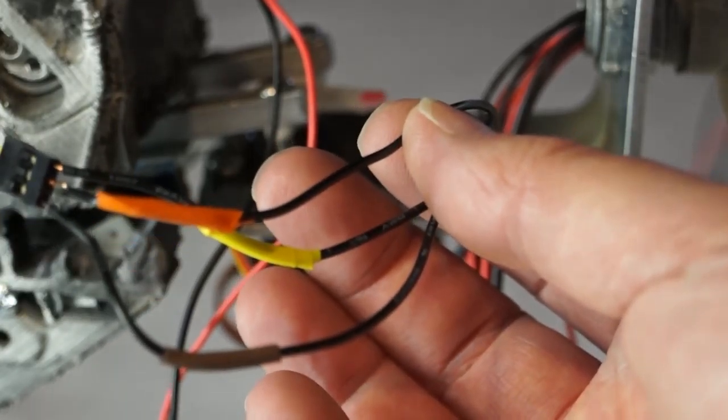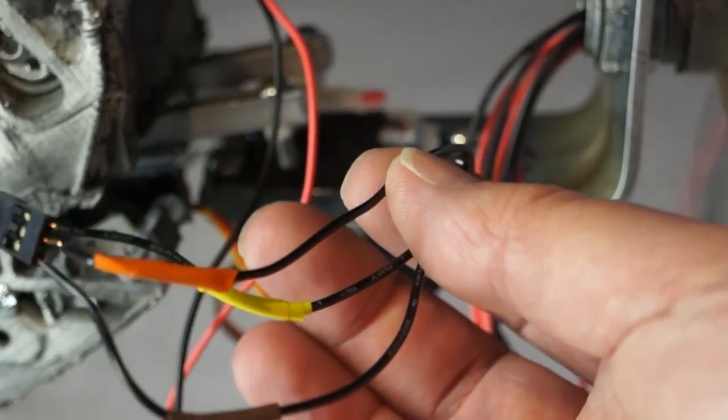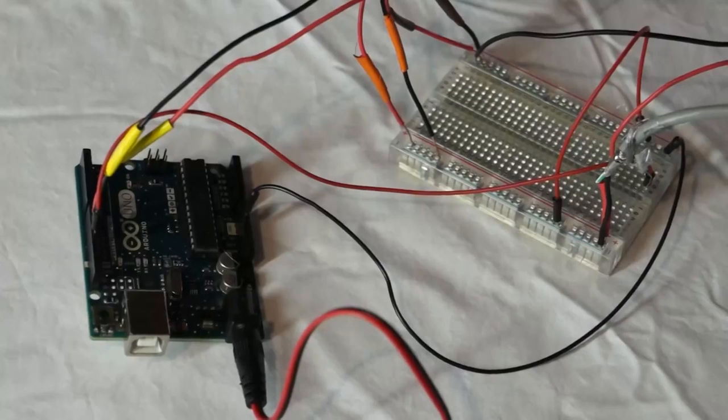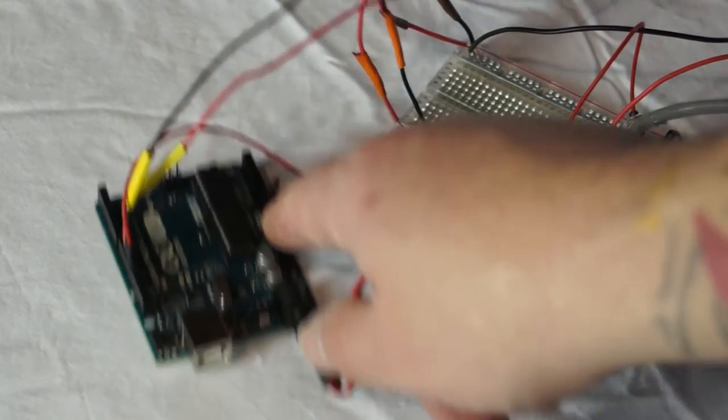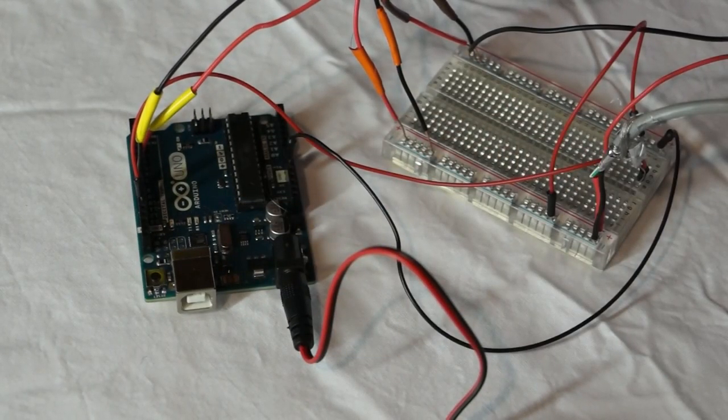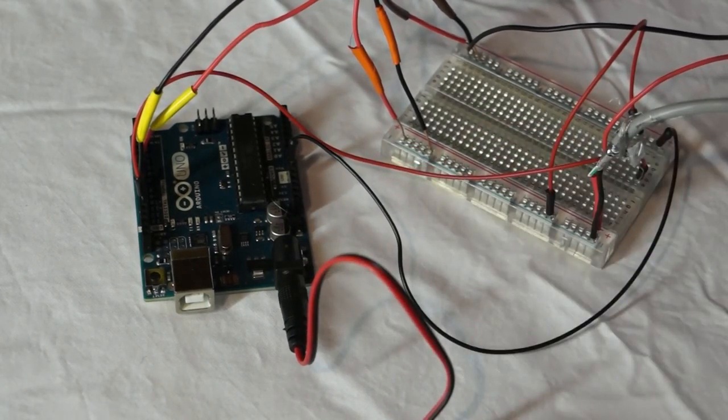And then what I've done is using electrical tape. Let's see if we can get that to focus. Using electrical tape, I've simply delineated my power, ground and signal wires so that when we wire all of this up, we know exactly what's what. And I've done that with both servo wiring sets.